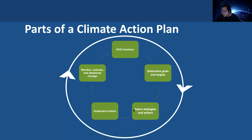After setting goals and targets, we select strategies and actions. This suite of strategies and actions spans multiple focus areas and helps achieve those targets. After selecting the strategies and actions and developing a plan, we implement those actions, monitor, evaluate, and adaptively manage them. We essentially continue repeating the process to make sure we have a climate action plan that's responsive to immediate community needs and priorities.